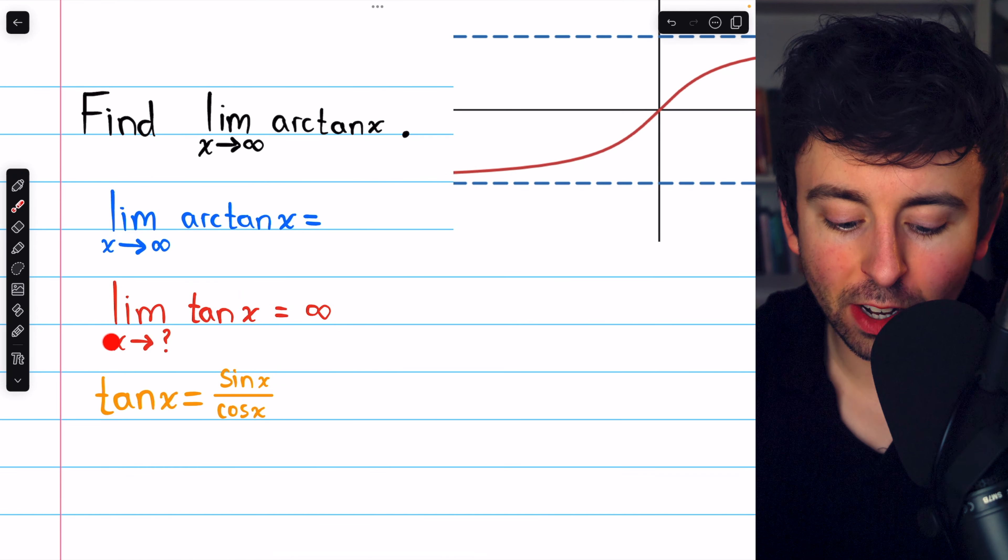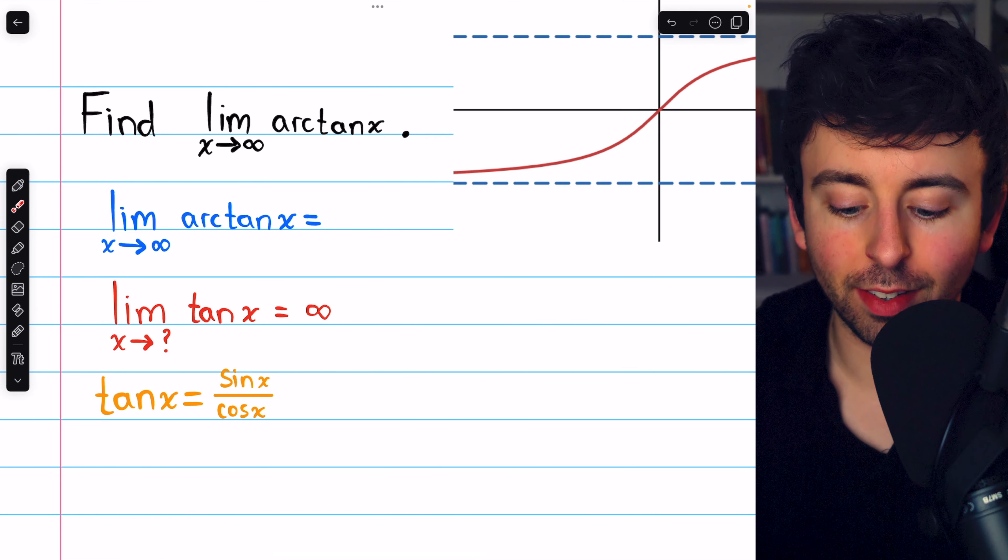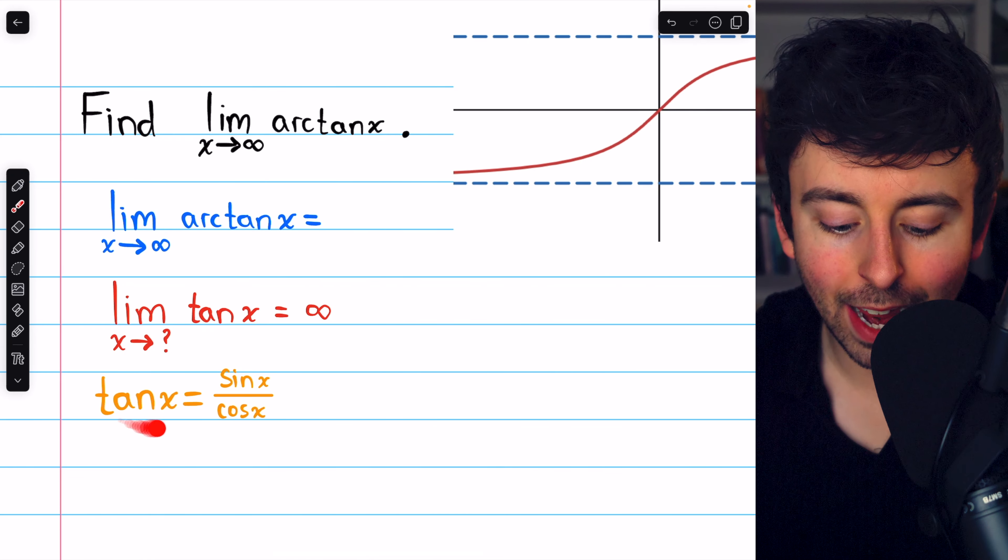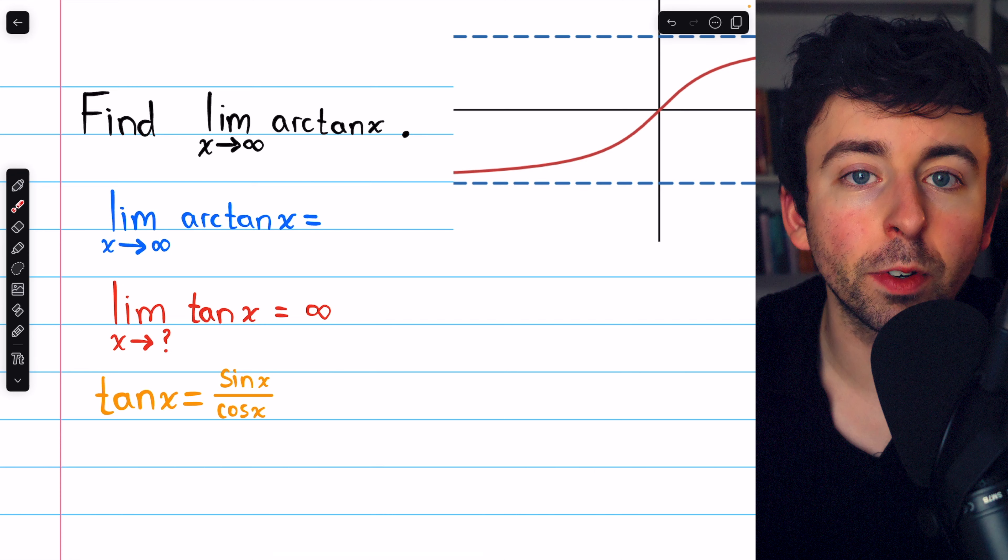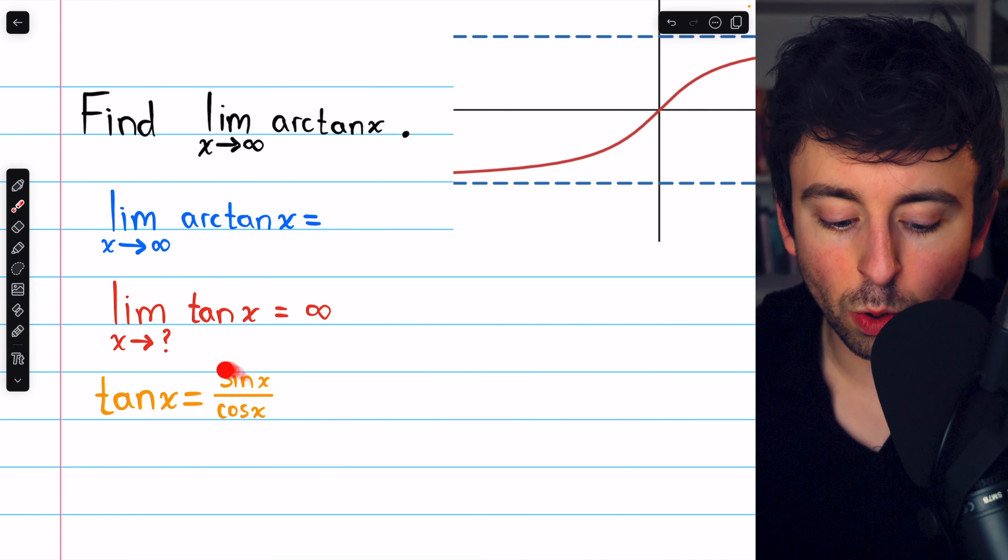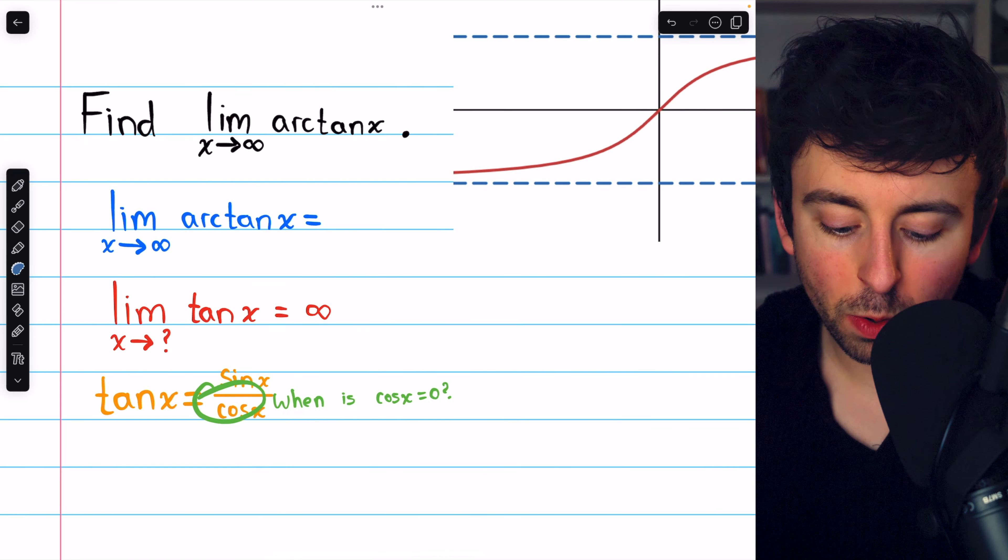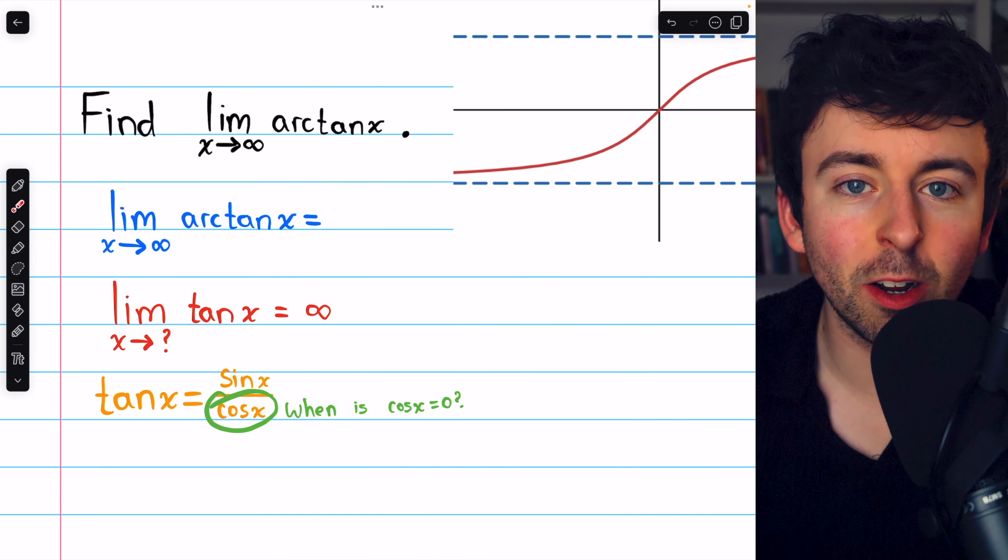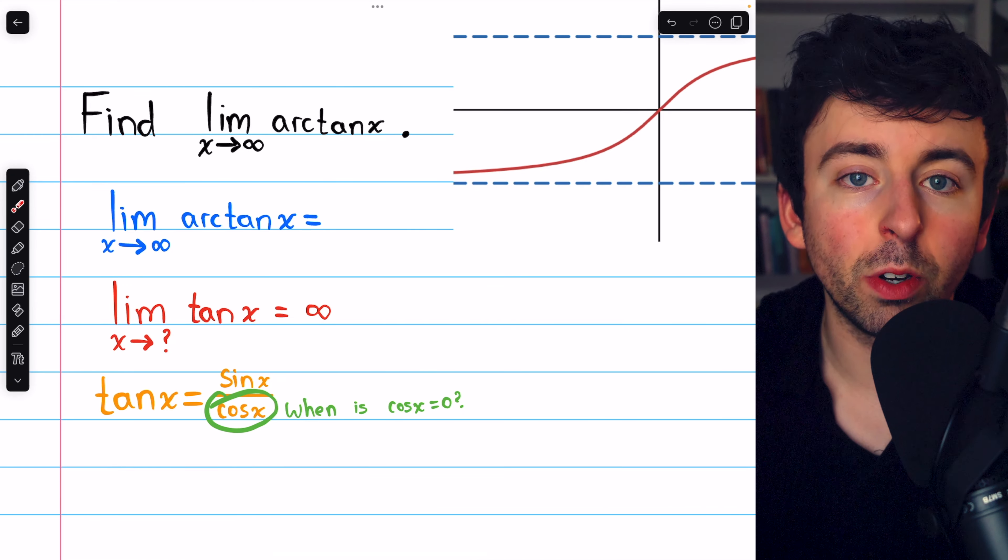So the question is where does tangent approach infinity, because that's the limit we're looking for. Well, it's useful to know that tan x equals sine x over cosine x. This is going to approach infinity when cosine goes to zero. So when is cosine equal to zero? That's what's going to make this go to infinity.